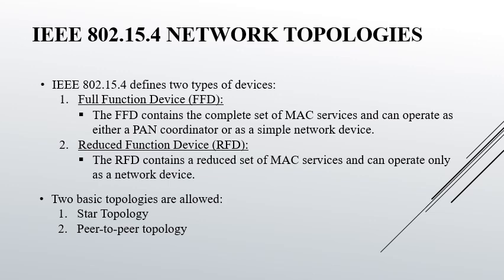IEEE 802.15.4 network topologies — to overcome the limited transmission range, multi-hop self-organizing network topologies are required. These can be realized taking into account that IEEE 802.15.4 defines two types of devices: the full function device (FFD) and the reduced function device (RFD). The FFD contains the complete set of MAC services and can operate as either a PAN coordinator or a simple network device, where PAN coordinator is the personal area network coordinator. The RFD contains a reduced set of MAC services and can operate only as a network device.